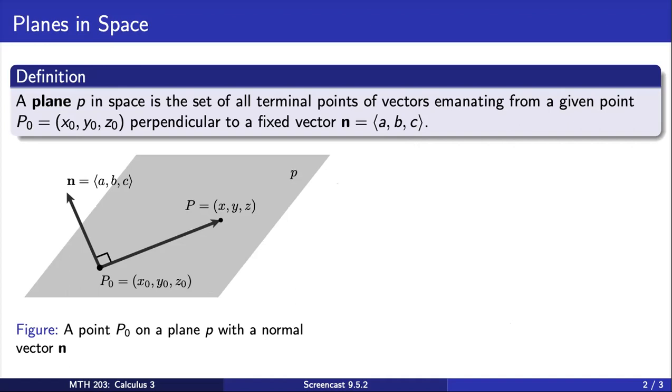As we have pictured here, we see that the point labeled P is the terminal point of this vector, which is perpendicular to this given vector N. We can choose any other point on this plane, shaded in gray, say over here, and this will be the terminal point of some vector that is, again, perpendicular to N.